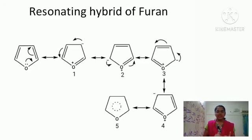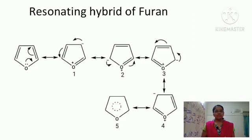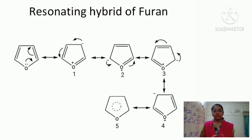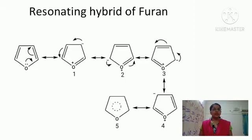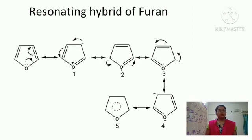In the second resonating structure, the negative charge from the third position shifts to form a double bond between C3 and C4, placing the negative charge at the fifth position. In the third resonating structure, the negative charge from C5 shifts to the second position. In the fourth resonating structure, the negative charge moves from C2 to the fourth position. So from these four resonating structures, the negative charge is distributed across all carbon atoms, and we can represent the resonance hybrid of furan accordingly.